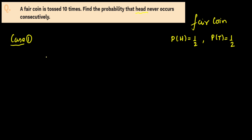Because right now we don't know how many heads there are, so we need to take cases. Case 1: we have 0 heads. If we have 0 heads, it is possible to arrange 10 tails such that no two heads are together. So in this case it will be 10C0 — selecting 0 positions out of 10 for heads.